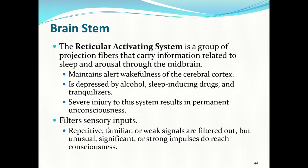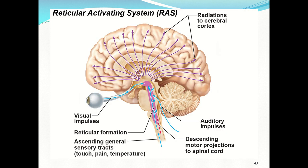The reticular activating system is a group of projection fibers that carry information related to sleep and arousal through the midbrain. It maintains alert wakefulness of the cerebral cortex and is depressed by alcohol, sleep-inducing drugs, and tranquilizers. Severe injury can result in permanent unconsciousness. It also filters sensory inputs — repetitive, familiar, or weak signals are filtered out, but unusual, significant, or strong impulses reach consciousness. It radiates projection fibers out toward the brain, maintaining consciousness, alertness, and muscle tone.